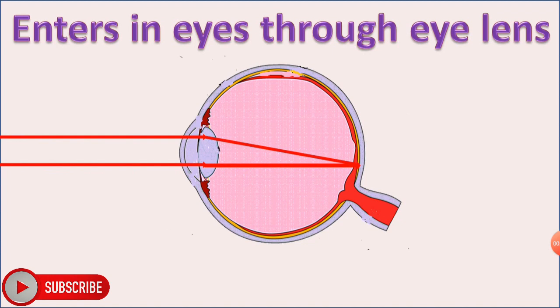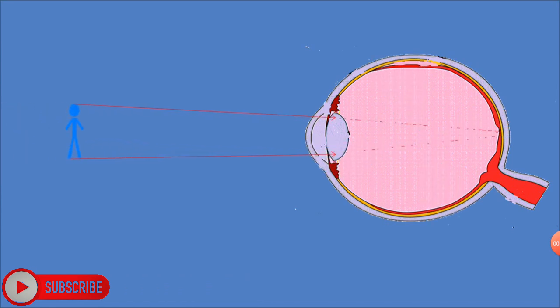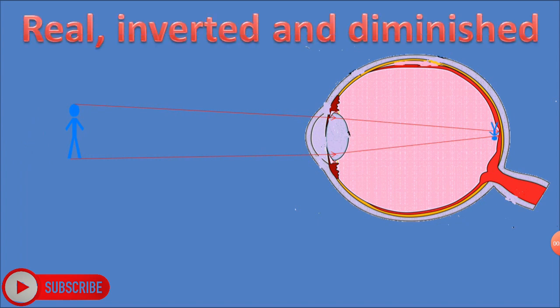The eye converges light coming from objects onto the retina. Real, inverted, and diminished images form on the retina, which are transmitted through the optic nerve to the brain. The final image formed in the brain is virtual, erect, and the same size as the object.